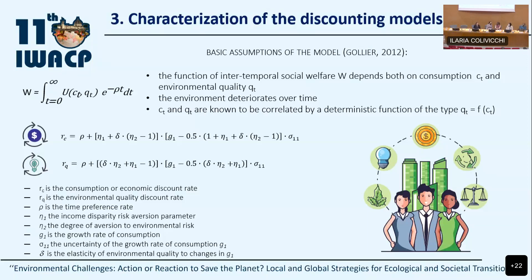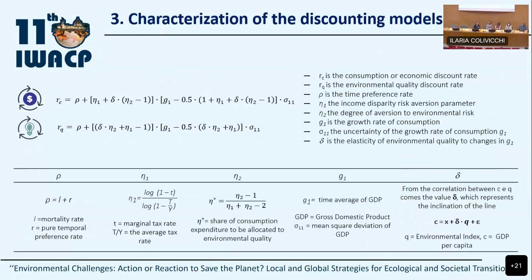Additional parameters are economic in nature, such as the growth rate of consumption, income elasticity, and risk aversion. In this slide, we summarize the formulas derived from the literature in order to estimate each of the parameters of the two formulas.